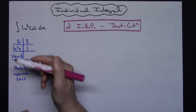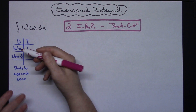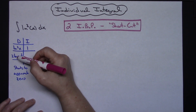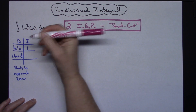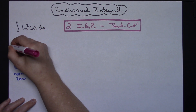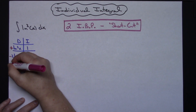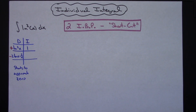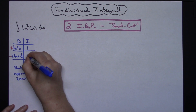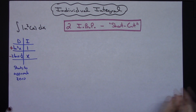Ideally you want to take the derivative repeatedly and get down to 0, but sometimes that doesn't work and in this case it didn't — but I can see that I am approaching 0, so I'm only going to do this once. Coming back up, per my shortcut rules I'm going to put a plus in front of the first row and a minus in the second, alternating signs. Then in the integral column I'm going to integrate 1 with dx, which gives me x.